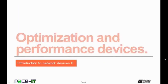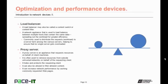Now let's talk about optimization and performance devices. We will begin by talking about the load balancer. A load balancer may also be called a content switch or content filter. It's a network appliance used to load balance between multiple hosts that contain the same data, spreading out the workload for greater efficiency. They're commonly used to distribute requests or workload to a server farm among the various servers, helping to ensure that no single server gets overloaded with work requests.